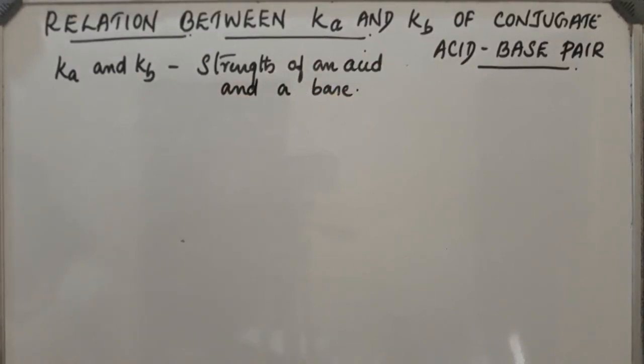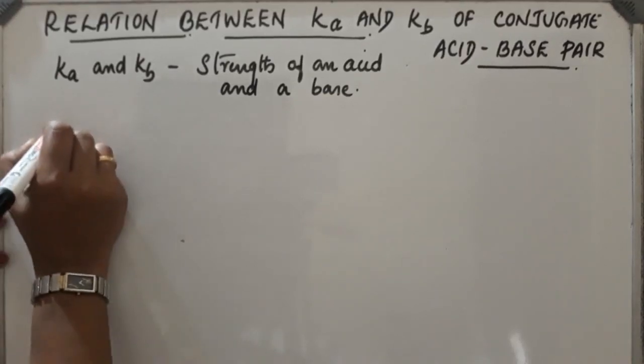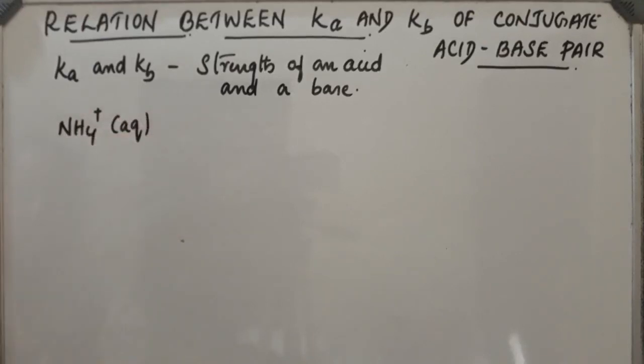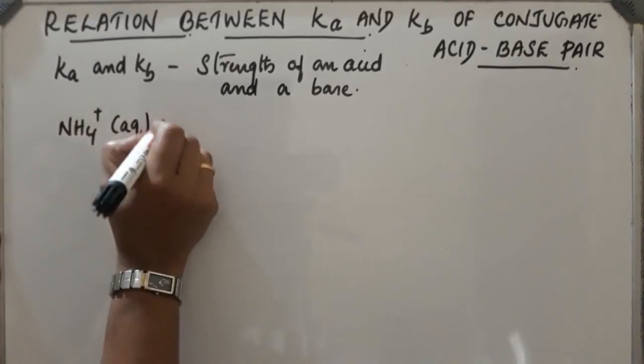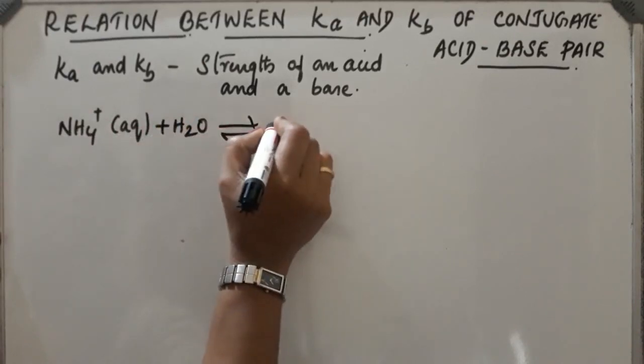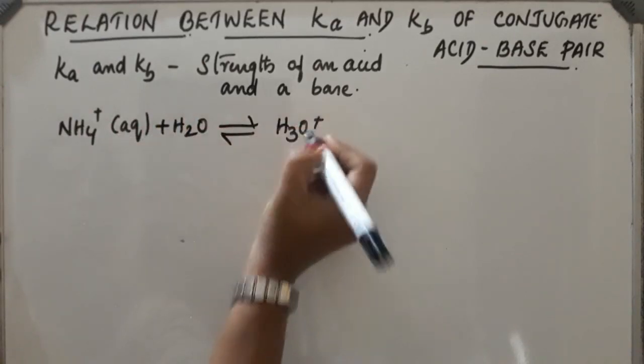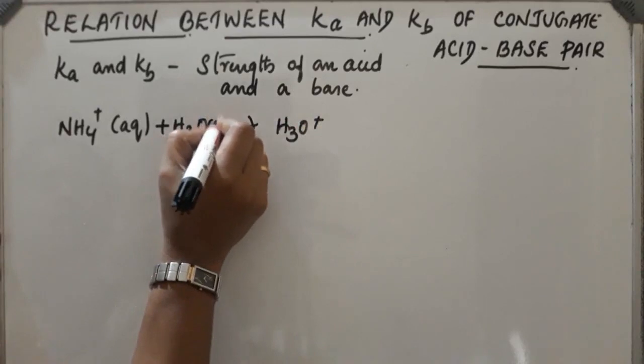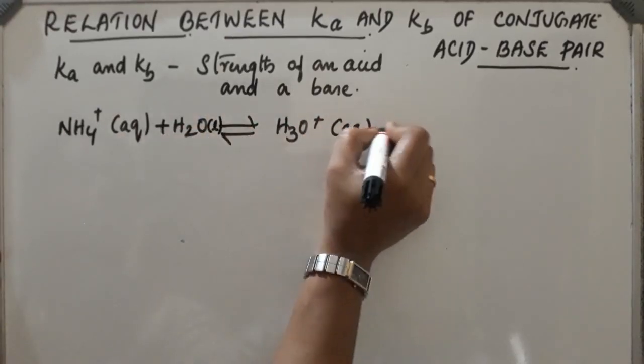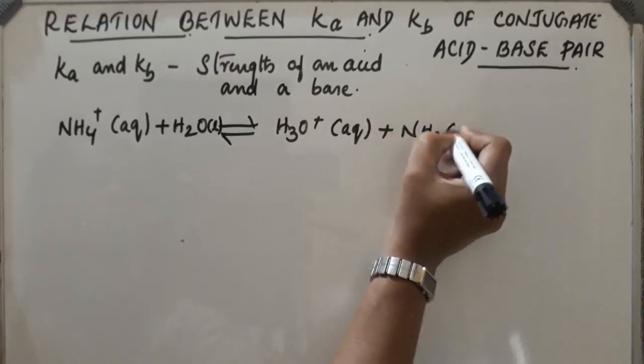When an acid hydrolyzes, its conjugate base is obtained. Let us take an example in the case of ammonium, NH4+. It acts as an acid on hydrolysis. It gets converted into H3O+, because it liberates its H+ ions and forms H3O+, and NH3.